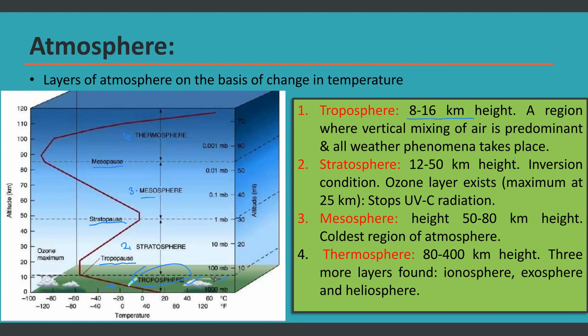The troposphere is the region where vertical mixing of air is predominant — the lower layer moves to the upper side and the upper layer moves to the lower side. All kinds of weather phenomena, such as rainfall, fog, and snowfall, also take place only in the troposphere. After the troposphere, no weather phenomena take place.